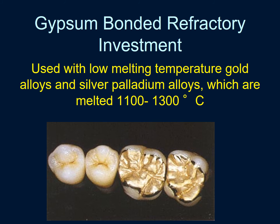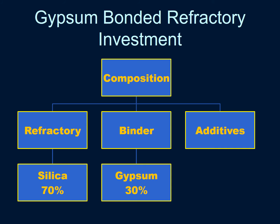As we mentioned previously, gypsum bonded dental refractory investments are used primarily in conjunction with low melting temperature gold alloys and silver palladium alloys, which are typically melted in the range of 1,100 to 1,300 degrees Celsius. Gypsum bonded materials consist of 70% silica, which is typically a mixture of quartz and cristobalite, and 30% of the binder, which is usually calcium sulfate hemihydrate, while the additives are usually in trace quantities.